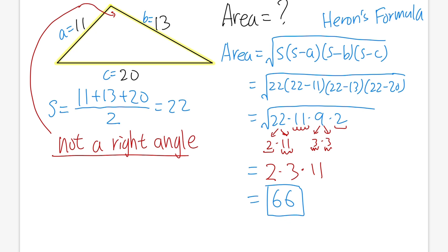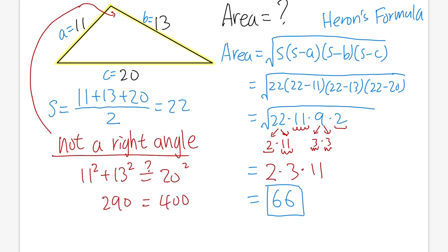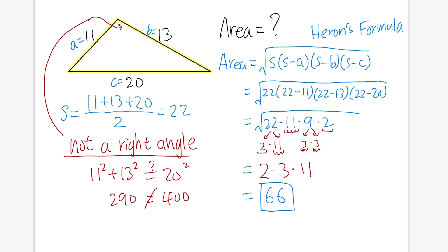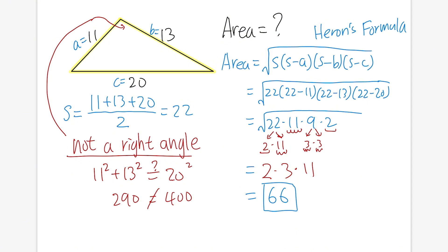This is not a right angle because the sides do not obey the Pythagorean theorem. Since 20 is the longest side, let's set it up: 11 squared plus 13 squared — does that give us 20 squared? No. On the left-hand side, we have 121 plus 169, which is 290. But on the right-hand side, it's 400. So if the sides don't obey the Pythagorean theorem, we do not have a right angle, and we cannot use base times height divided by 2.